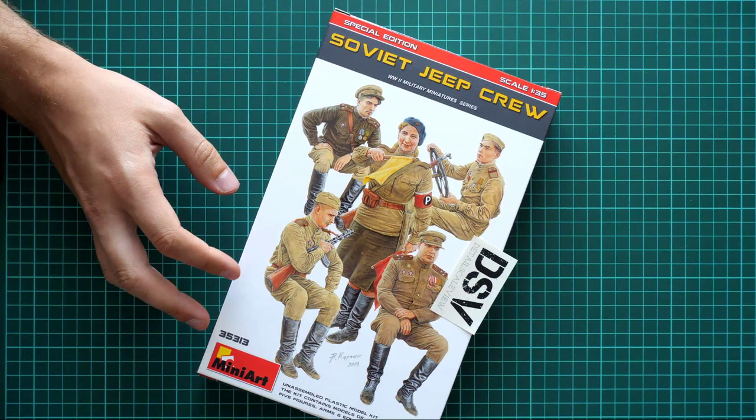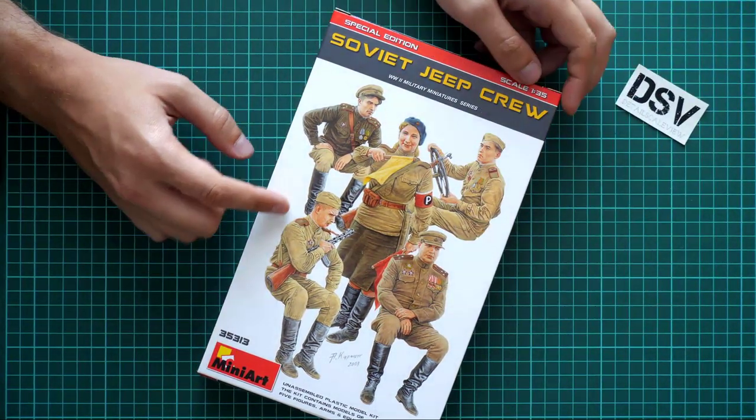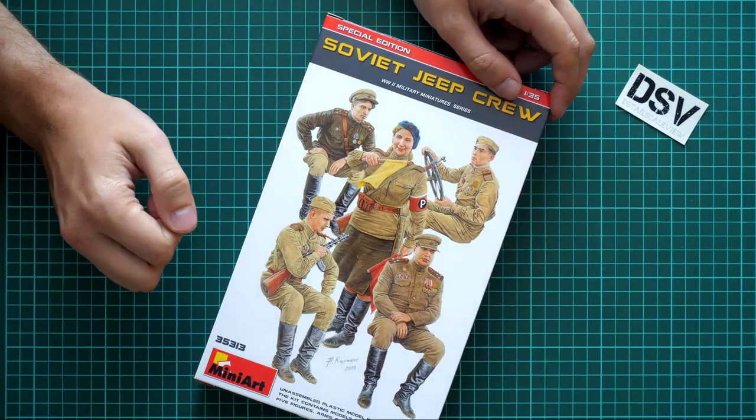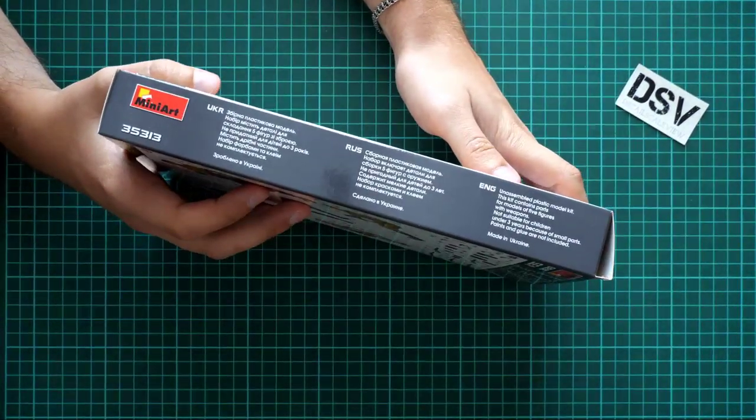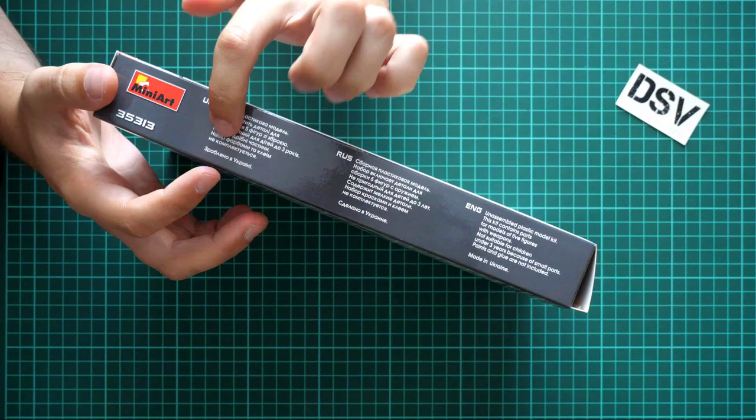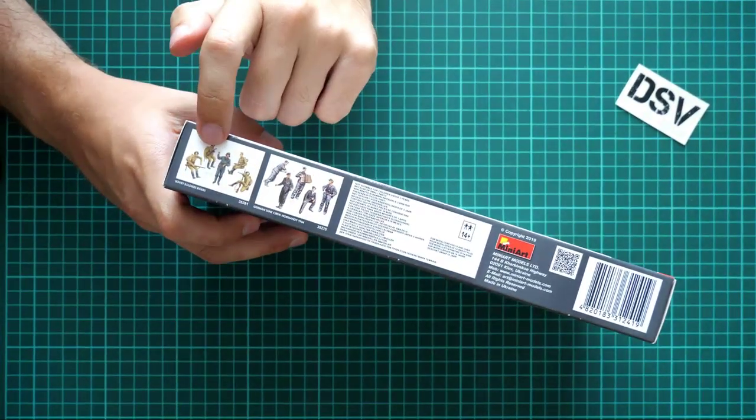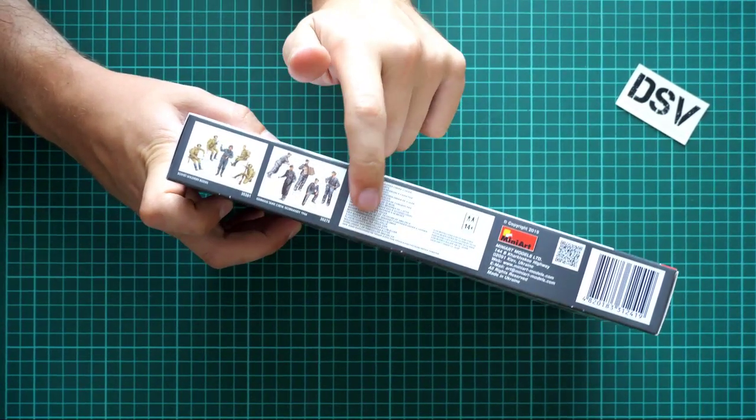First of all, we have quite nice box art. As you can see, there are five figures included. On this side we have information about the kit written in Ukrainian, Russian, and English. On the other side, there are small pictures of other kits in 1:35 scale, safety information, and the manufacturer's address.